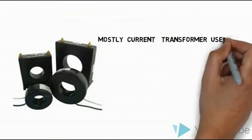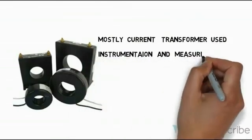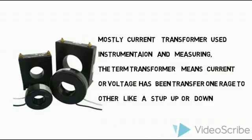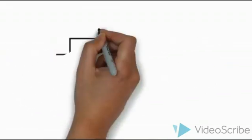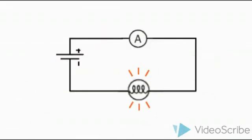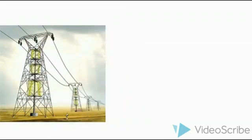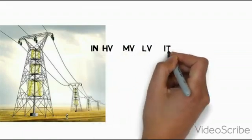We will talk about the instrument transformation. The current transformer is a step-up and step-down device, and it is used as a measurement transformer.